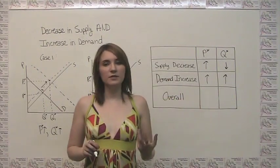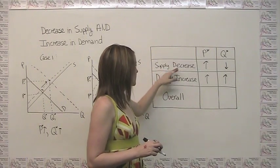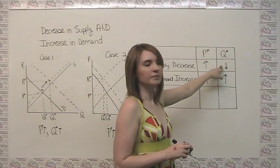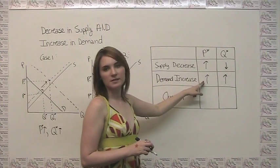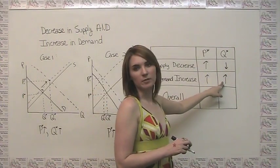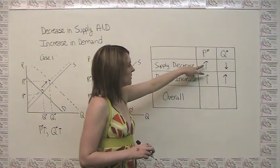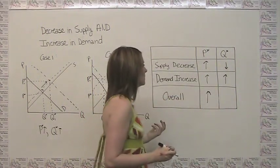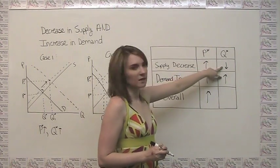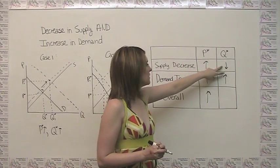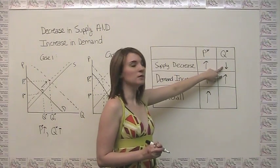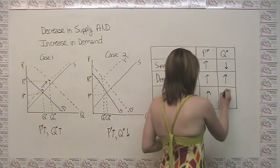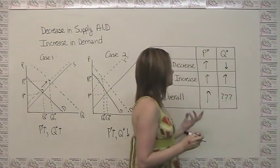Qualitatively, when we have a decrease in supply, we get an increase in equilibrium price and a decrease in equilibrium quantity. When we have an increase in demand, we get an increase in equilibrium price and an increase in equilibrium quantity. The price effect is straightforward — adding two increases gives an unambiguous increase. However, for quantity, we're adding together a decrease and an increase, and without further information we don't know which is bigger. So the effect on equilibrium quantity is ambiguous.